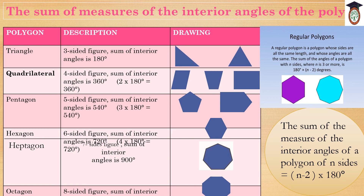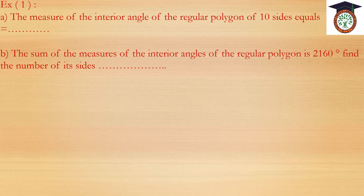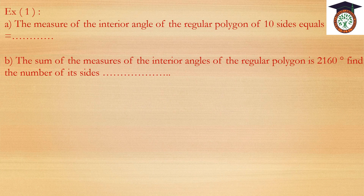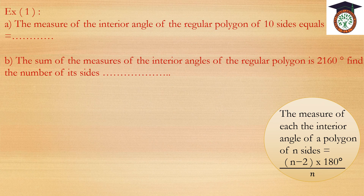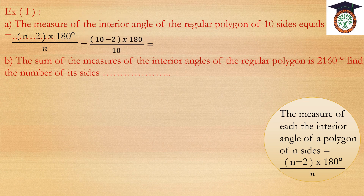The sum of the measures of the interior angles of a polygon of n sides equals (n minus 2) times 180 degrees. Exercise 1, part a: The measure of each interior angle of a polygon of 10 sides equals (n minus 2) times 180 over n, which equals (10 minus 2) times 180 over 10, which equals 144 degrees.